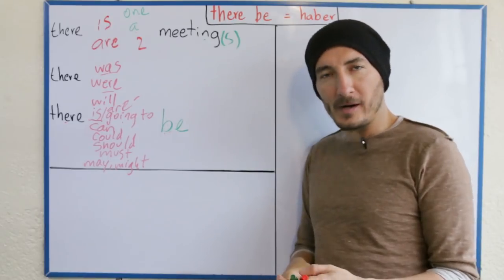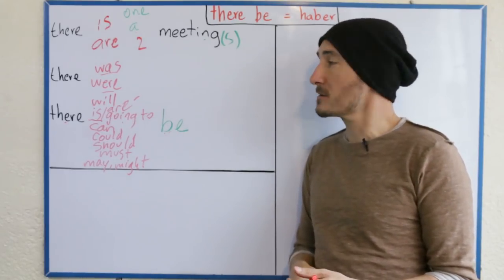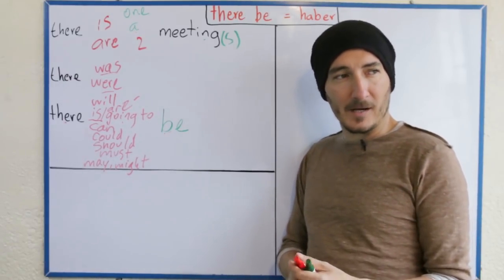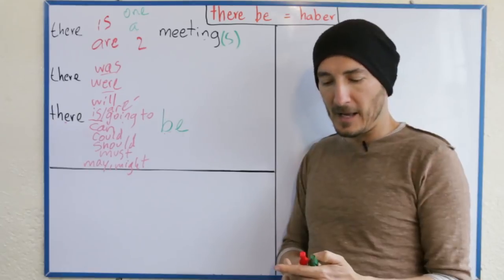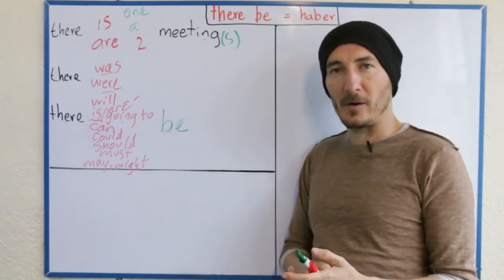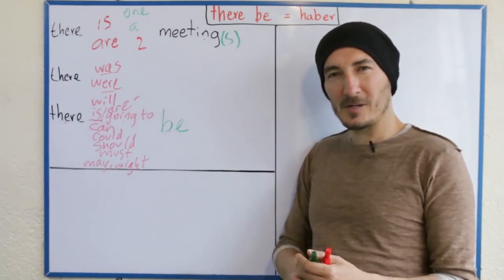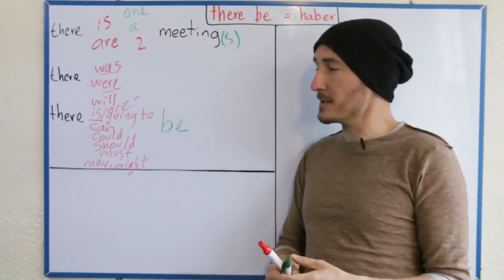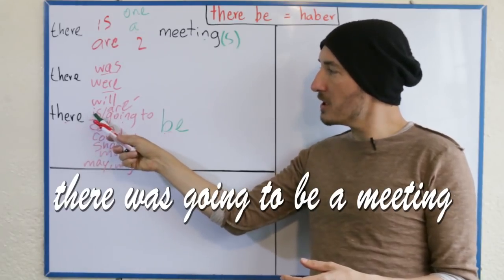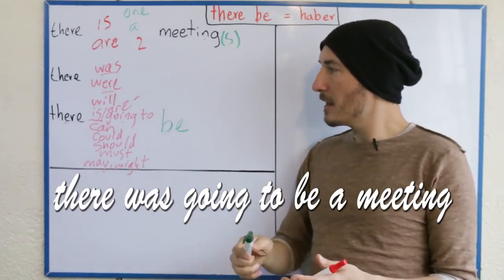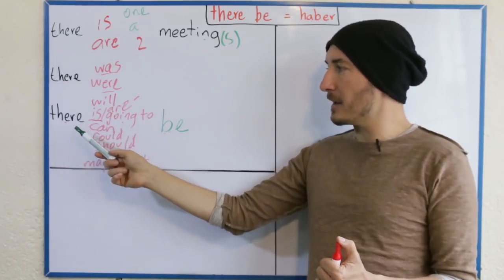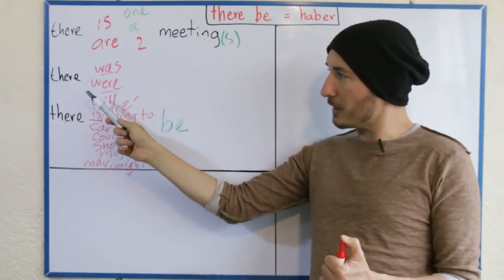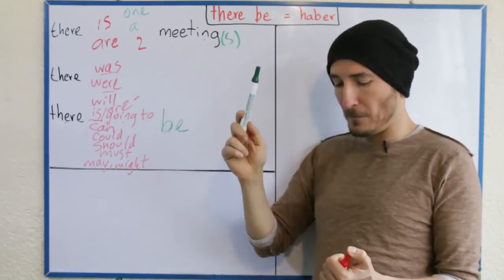¿Cómo se diría entonces en pasado? 'Iba a haber una reunión' e 'iba a haber dos reuniones'. Teniendo en cuenta el futuro con 'going to', ¿cómo sería eso mismo en pasado? Iba a haber una reunión pero la cancelaron. Si esto es 'va a haber', ¿cómo sería 'iba a haber'? There was going to be a meeting. Y 'iba a haber dos reuniones' — there were going to be two meetings.